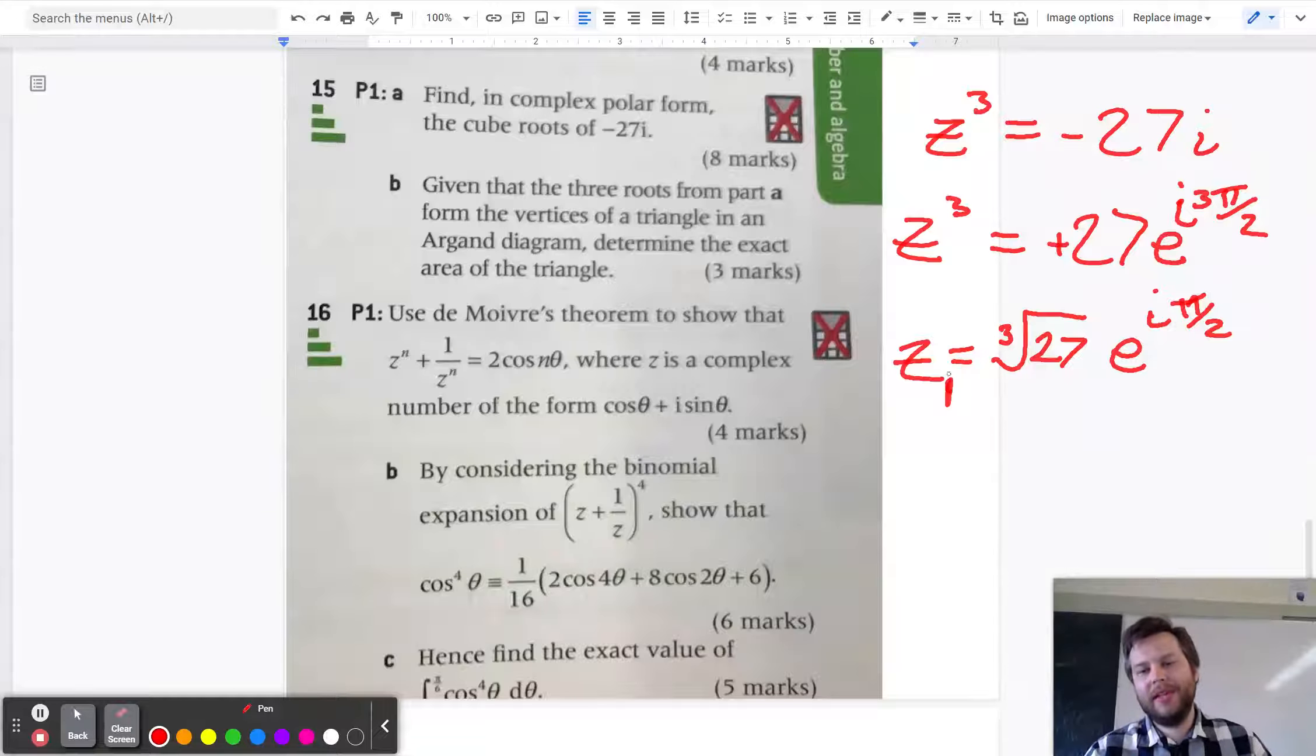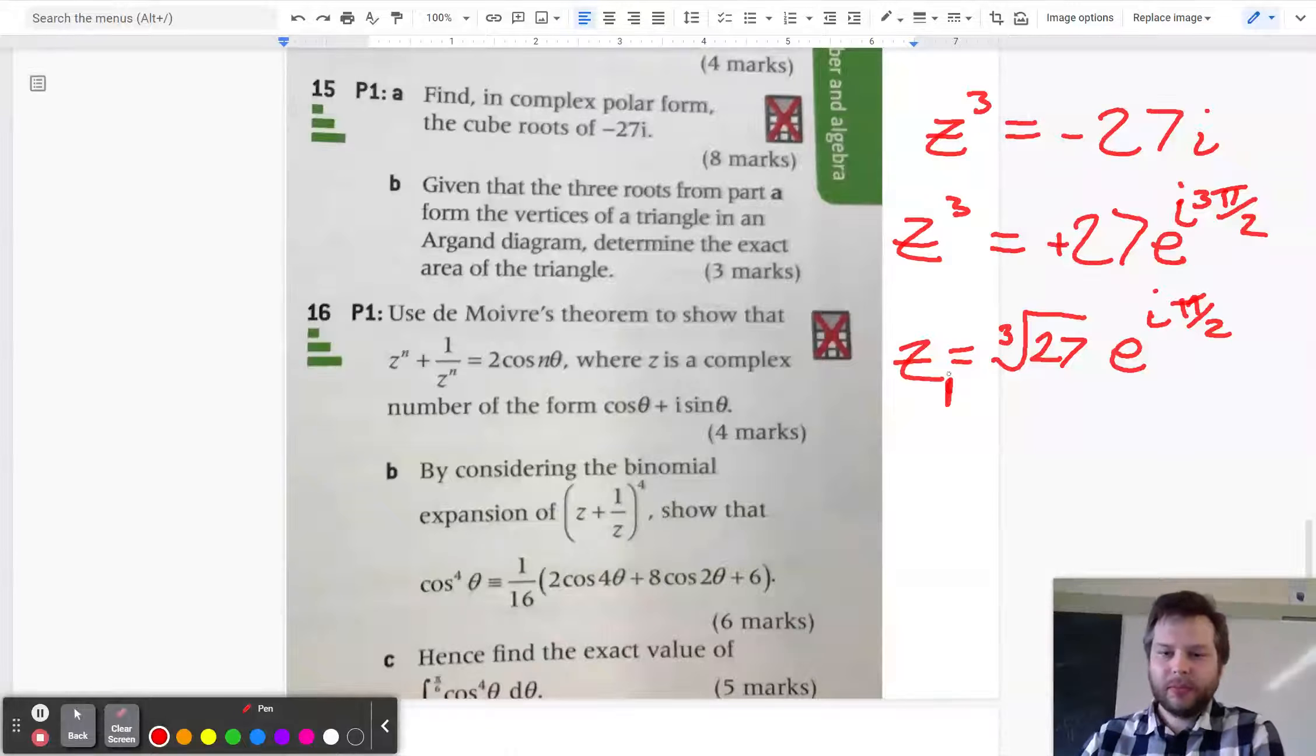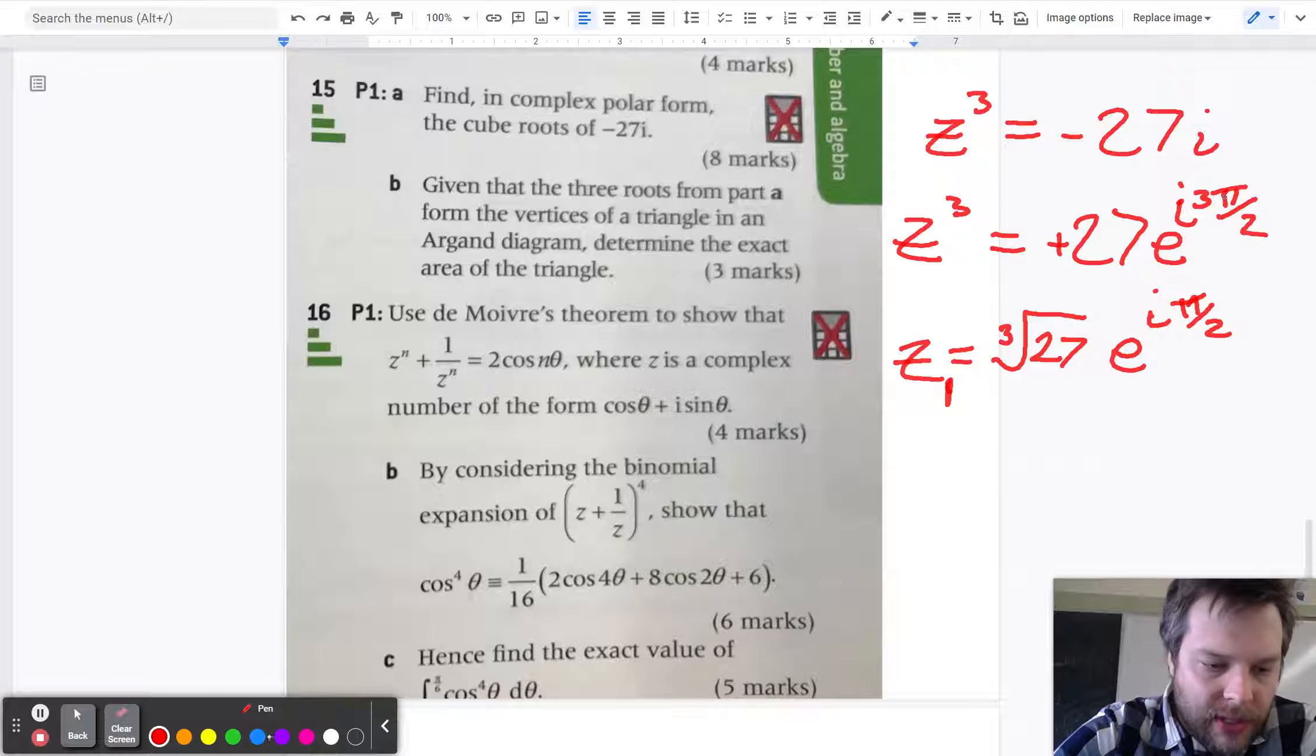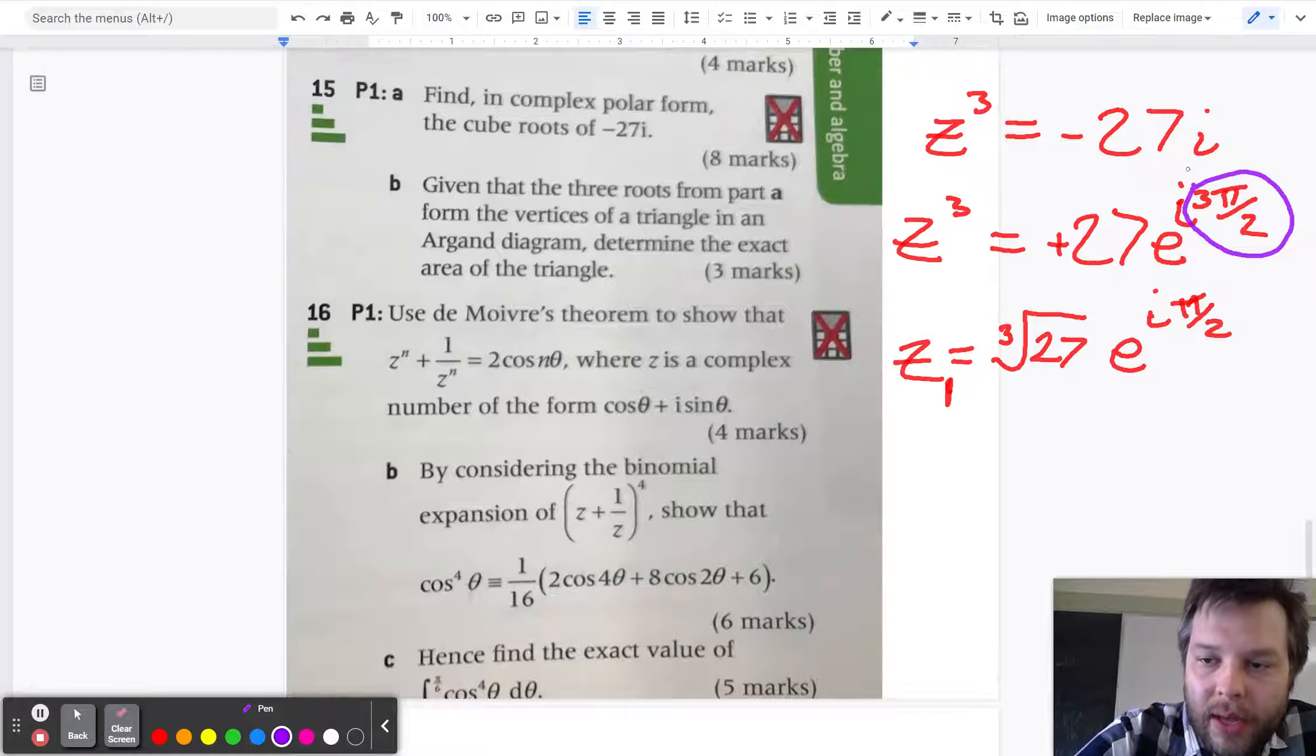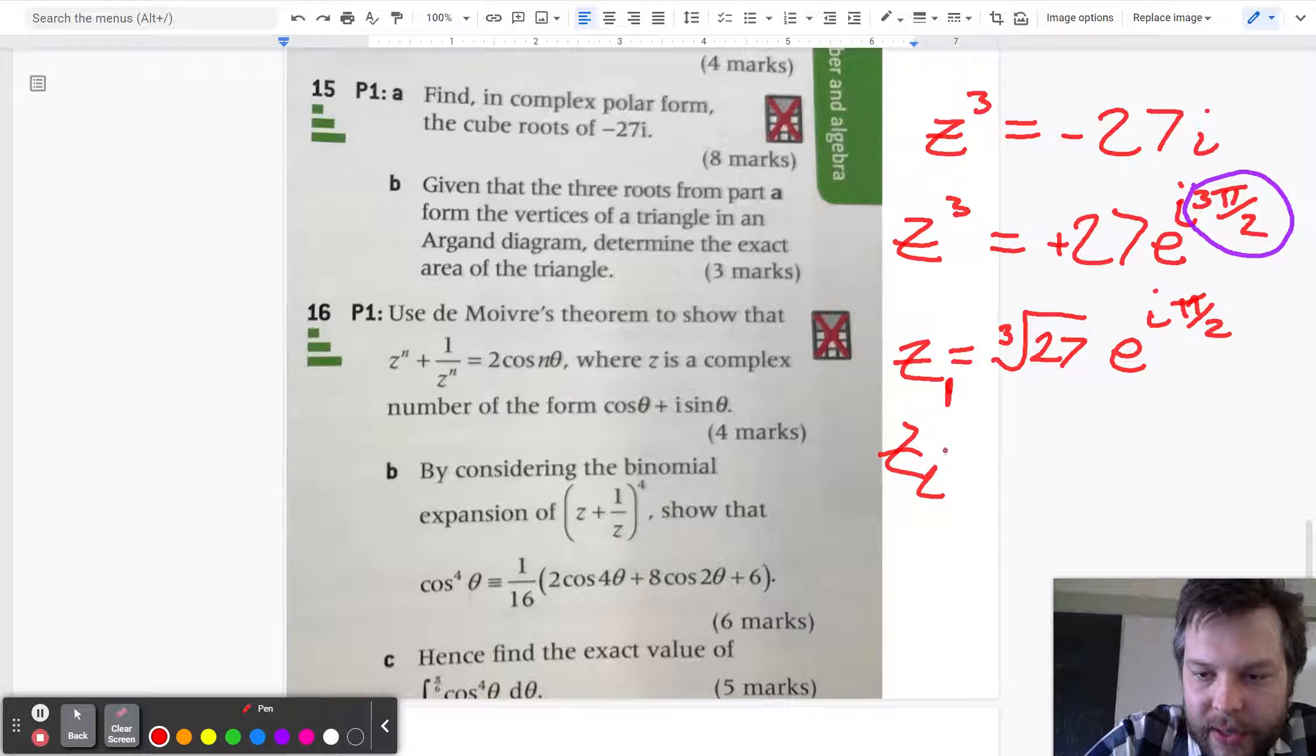Because you can always add 2 pi to the angle in order to get an equivalent value. So if we had added 2 pi to our original z cubed angle up here, this would become 7 pi over 2. And so my z2 is going to be the cube root of 27